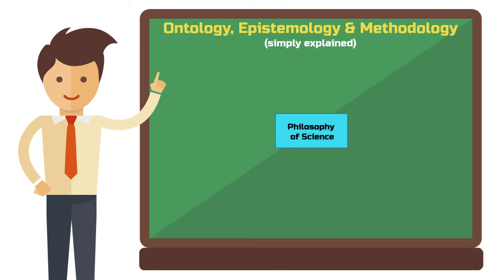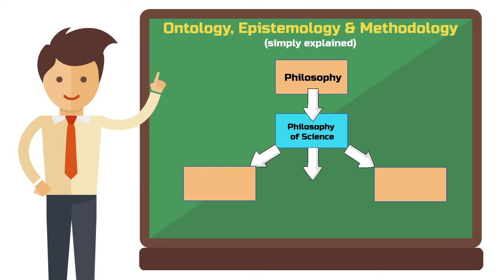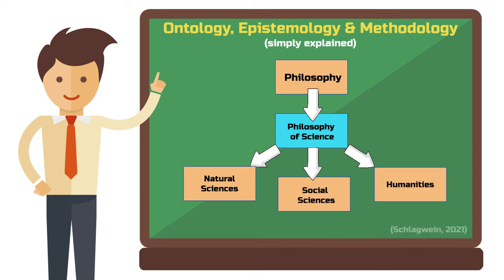This field, which is part of philosophy, serves as a meta-discipline with implications for all other scientific fields. The terms ontology, epistemology and methodology are inherently philosophical and concern how we understand science. This is crucial, because without philosophical underpinnings, scientific work as you know it wouldn't be possible.